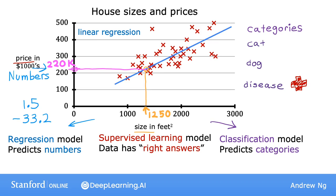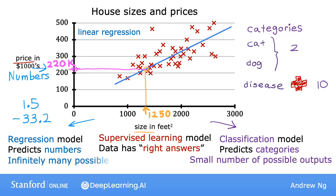So as a reminder about the difference between classification and regression, in classification, there are only a small number of possible outputs. If your model is recognizing cats versus dogs, that's two possible outputs, or maybe you're trying to recognize any of 10 possible medical conditions in a patient. So if there's a discrete, finite set of possible outputs, we call it a classification problem, whereas in regression, there are infinitely many possible numbers that the model could output.